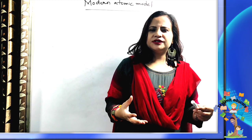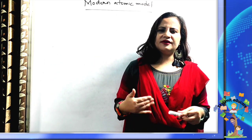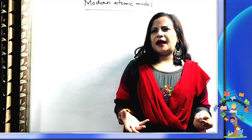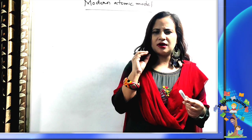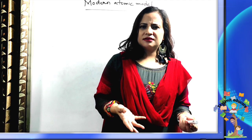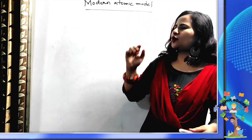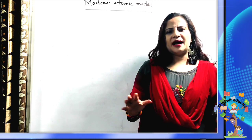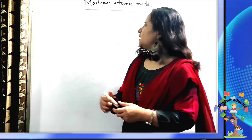We have already covered the discovery of electrons, protons, neutrons, and the nucleus. Gradually scientists worked hard with a lot of patience to discover subatomic particles. Many scientists gave their atomic models — J.J. Thomson, Rutherford, and finally Niels Bohr's atomic model. Today we are going to discuss the modern atomic model.